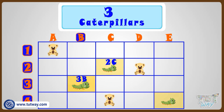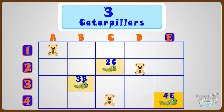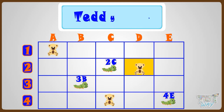And the third caterpillar is at the 4th row and E column, so its position can be named as 4E. Now let's name the location of this teddy bear.